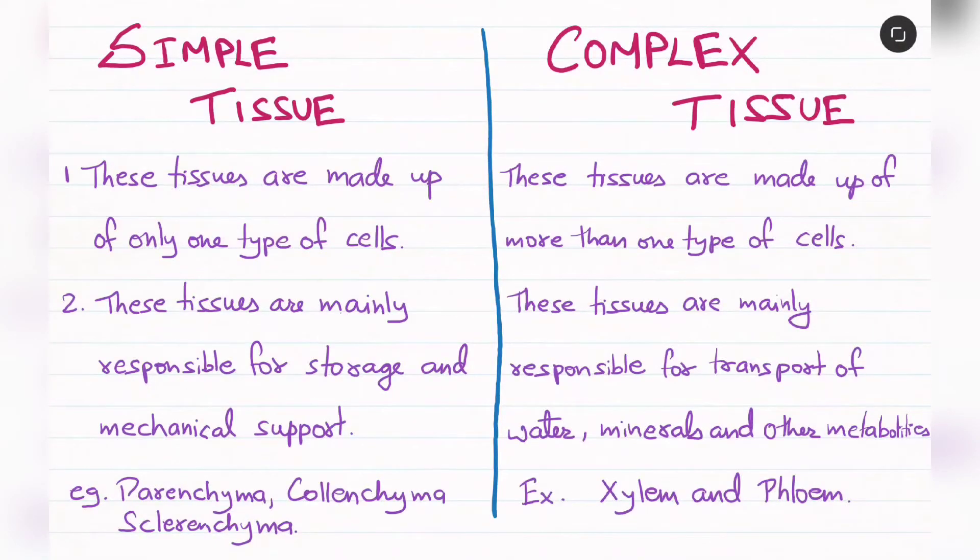Example of simple tissues are parenchyma, collenchyma, and sclerenchyma. And example of complex tissues are xylem and phloem.